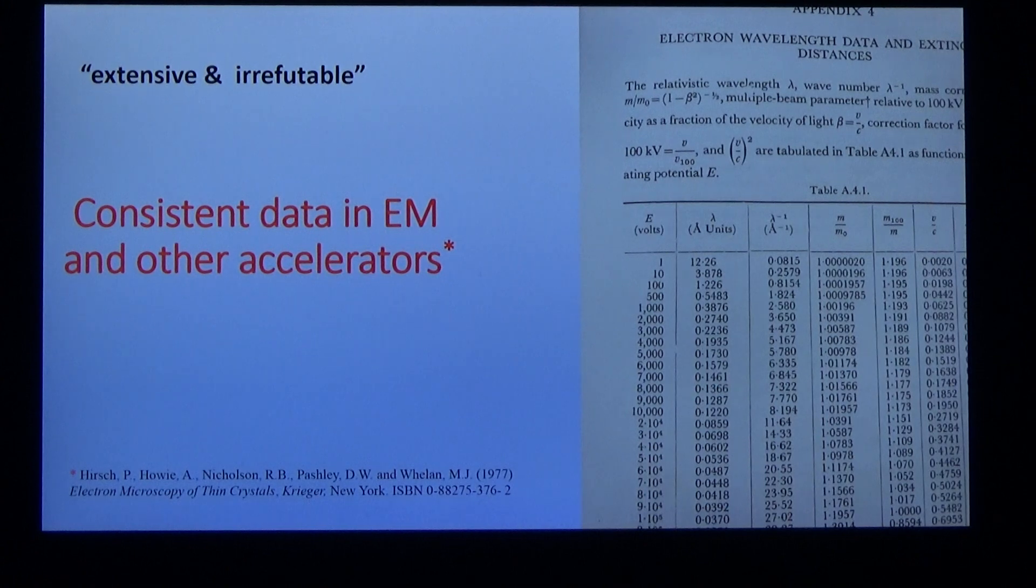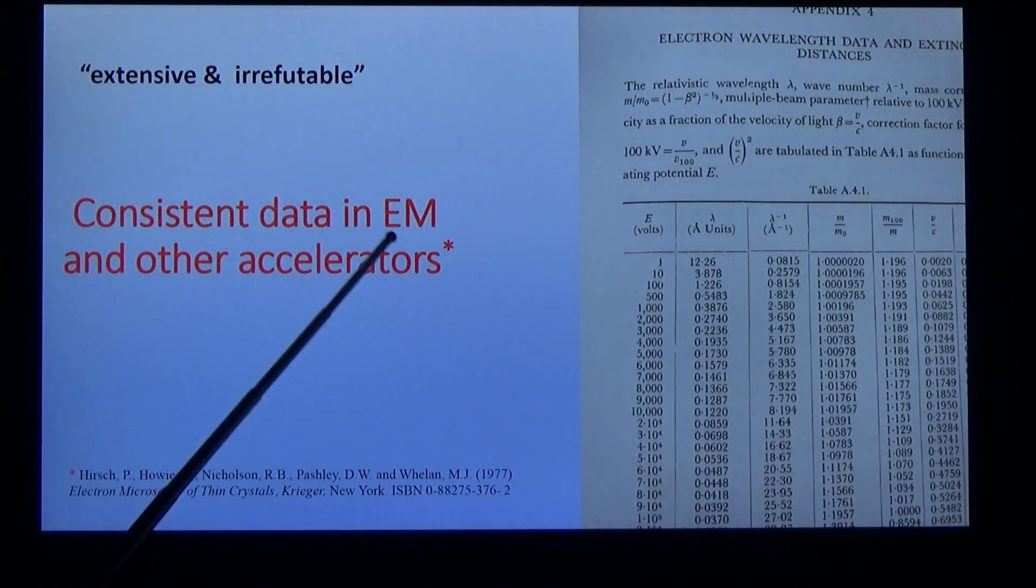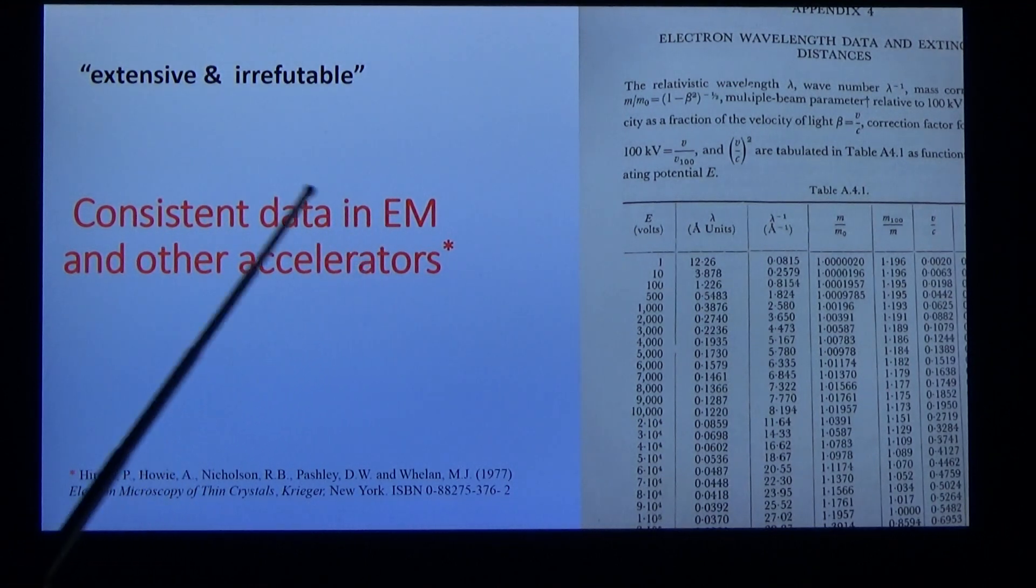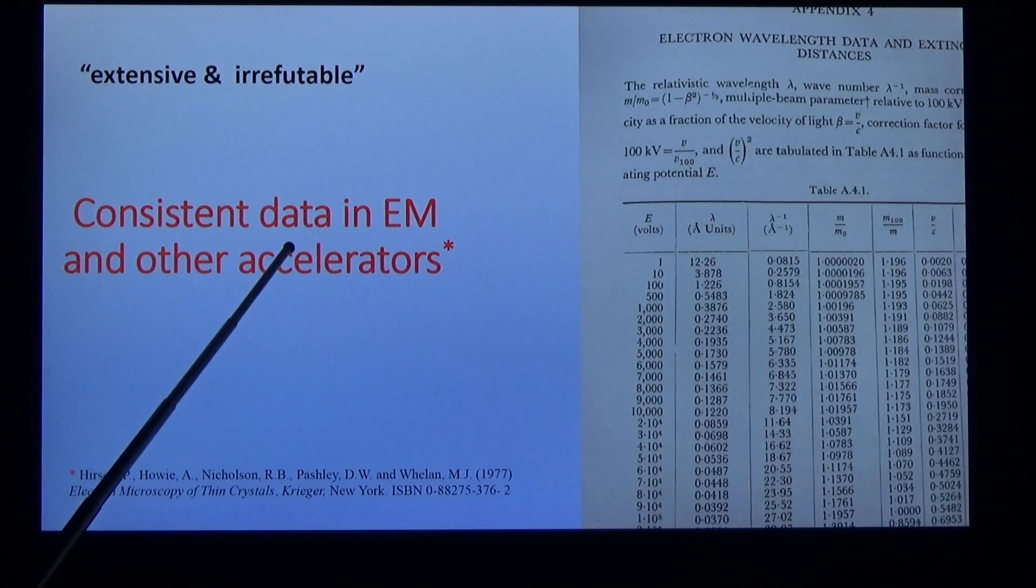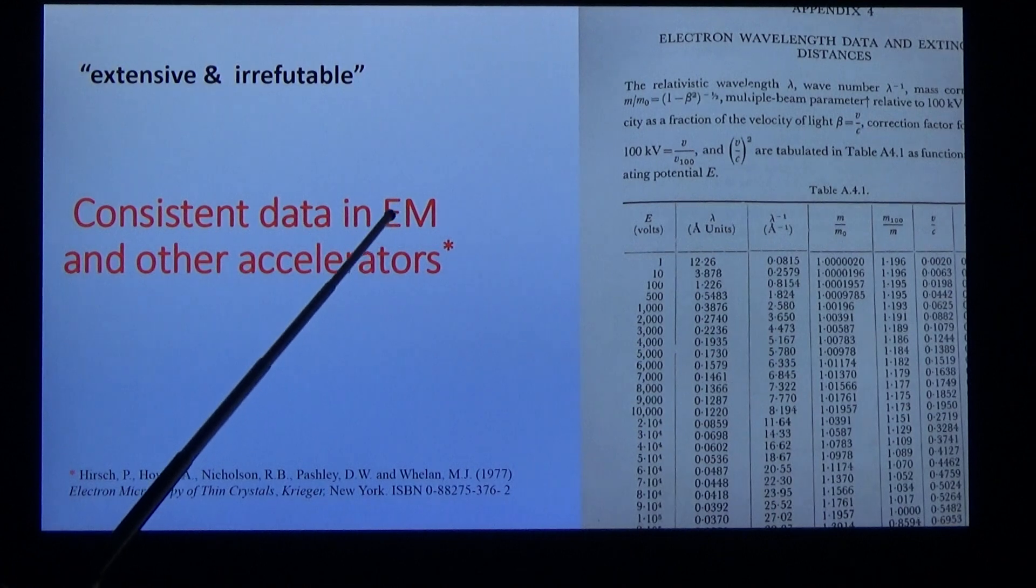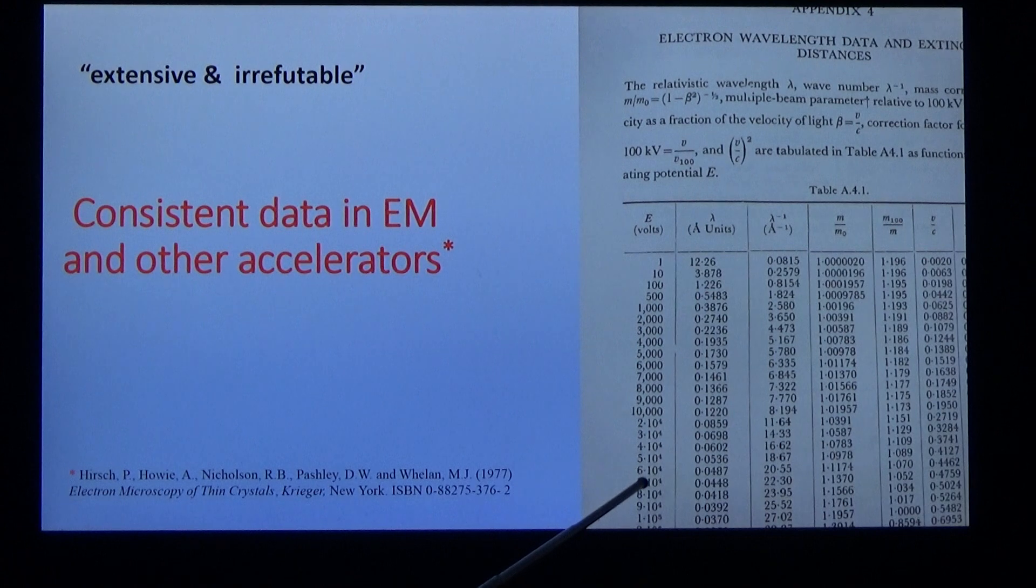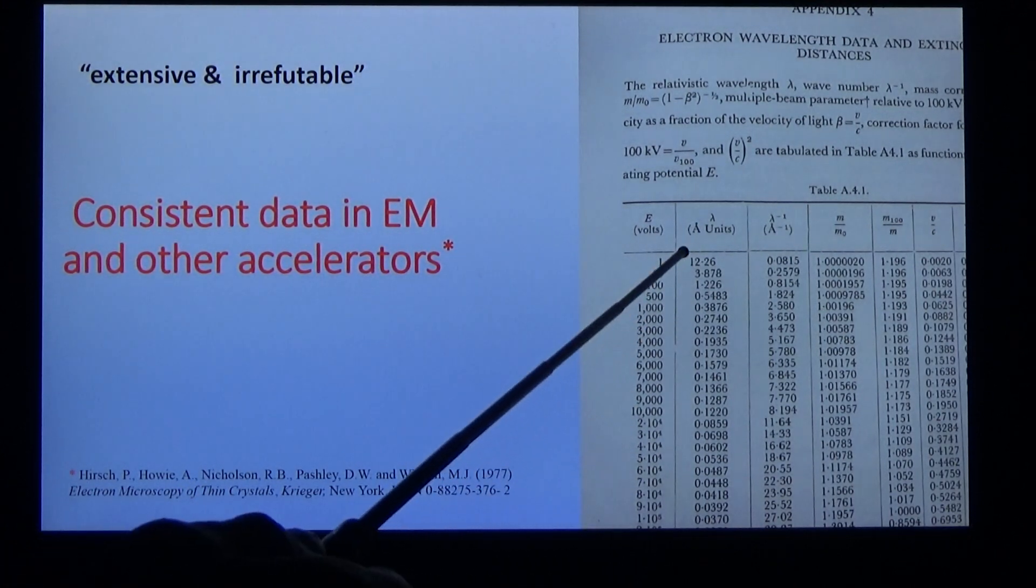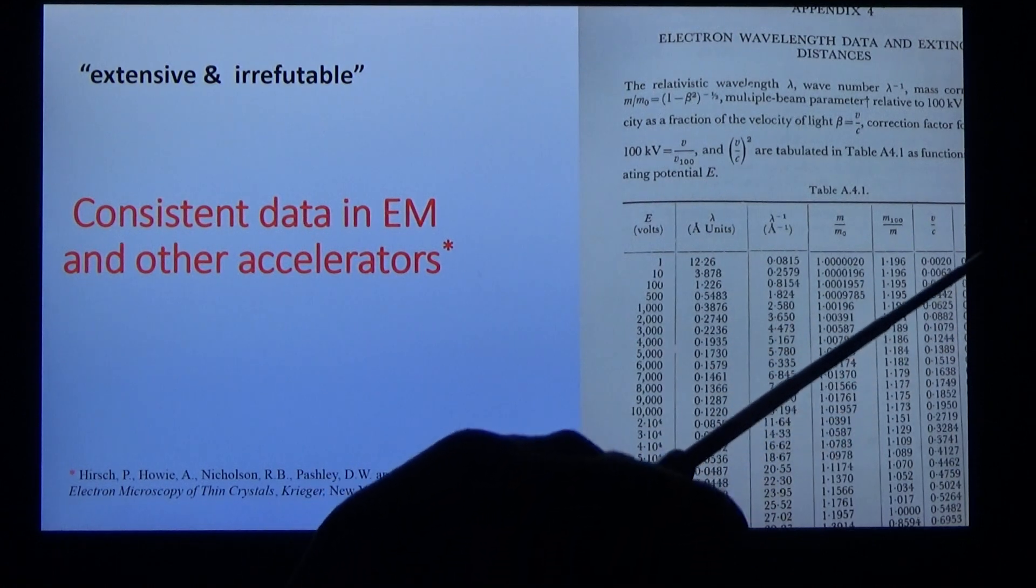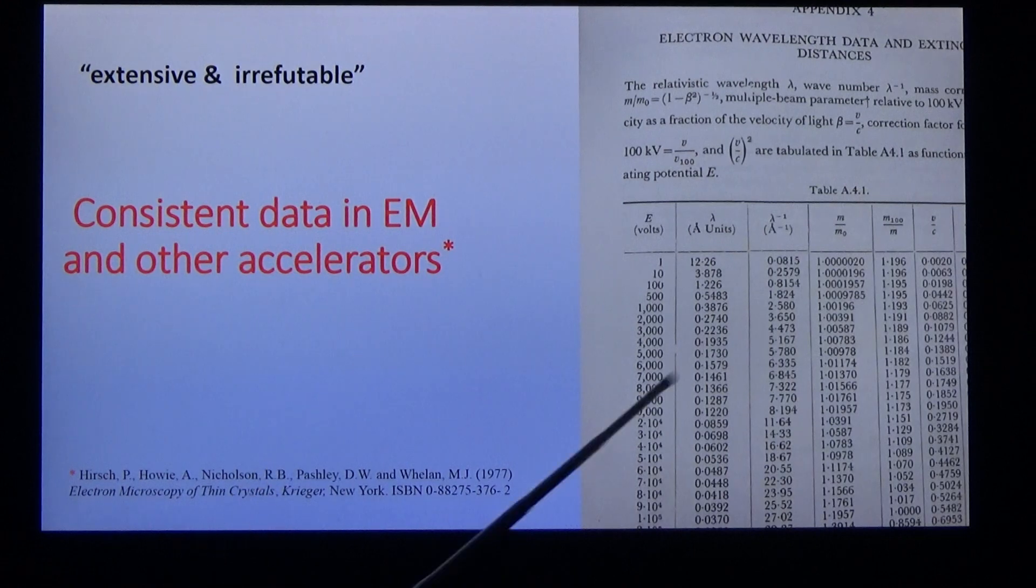We'll look at the data. The data is irrefutable. It's gained by many decades of electron microscopy and other particle accelerators. When we make measurements in the electron microscope—and millions have been made—we need to know the energy of the electron probe. Often we need to know the wavelength, the mass, the velocity, the frequency, and other parameters which we can calculate.